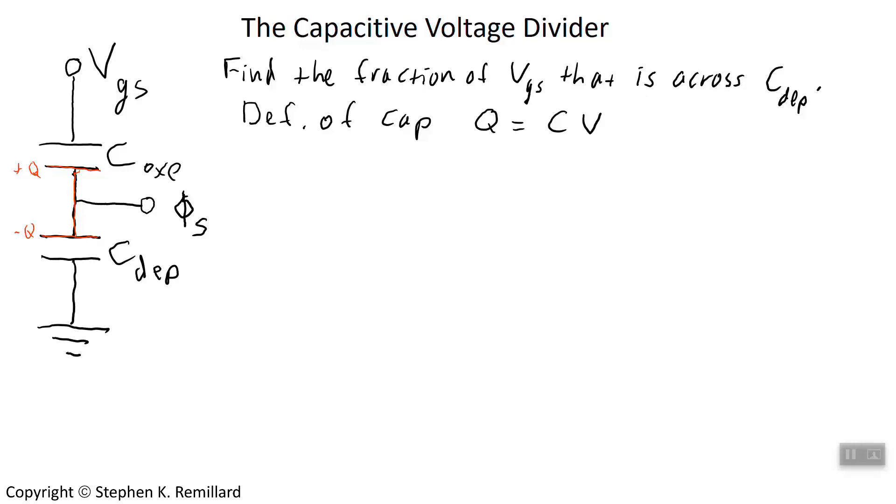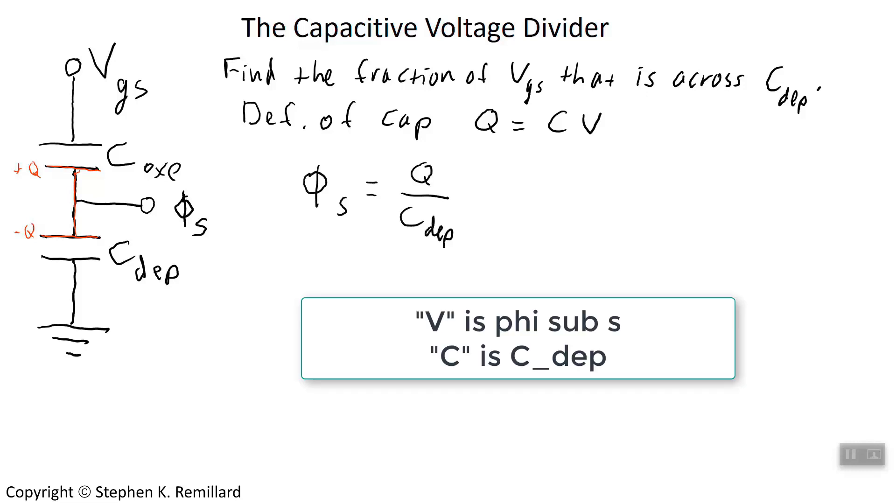We can solve for the fraction of voltage that we find across the depletion capacitor. To do that, we write the definition of capacitance for these two capacitors. The depletion capacitor has a voltage drop of phi sub s, so we'll write Q equals C V for that capacitor: Q equals phi sub s times C depletion.